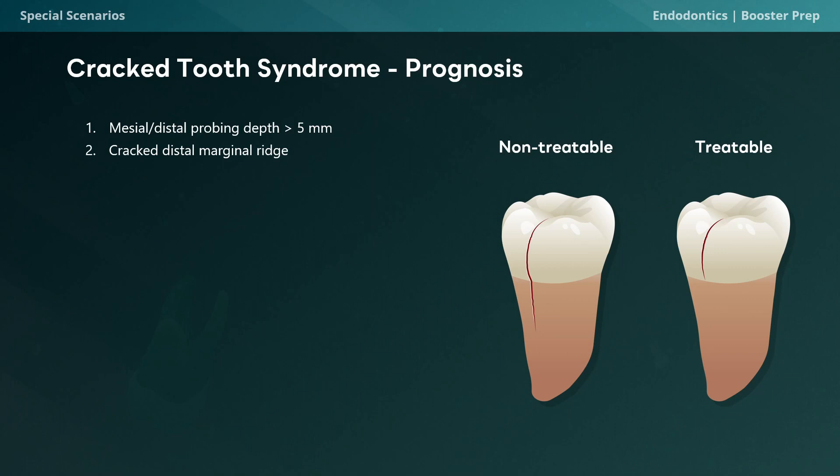The second question: is the distal marginal ridge cracked? If the answer is yes, we automatically have a guarded prognosis. Distal marginal ridge cracks are a bad sign, but they're not doomsday. Lastly, is there periapical pathology? Similar to the cracked distal marginal ridge, the prognosis will be guarded.